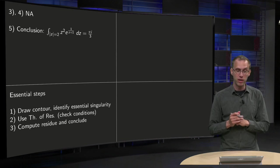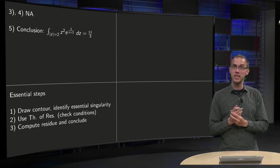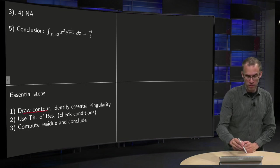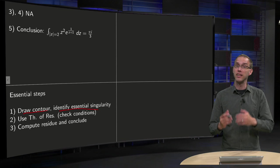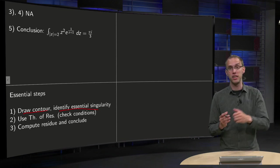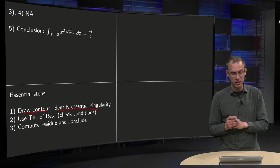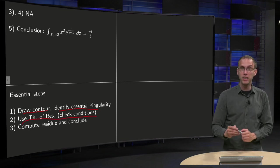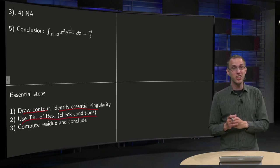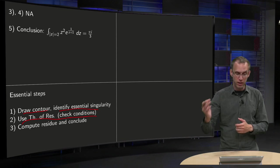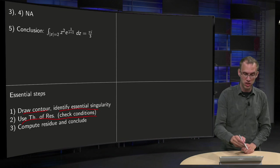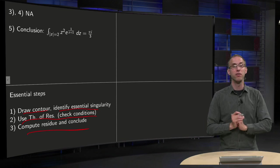And let us quickly review the essential steps in this exercise. First of all, you have to draw the contour and identify the singularities and notice in this case that you have an essential singularity. Then, in the second step, you use the theorem of residues, check whether the conditions are satisfied and compute the residue. That's quite some work in this exercise, and I conclude and there you have your integral.